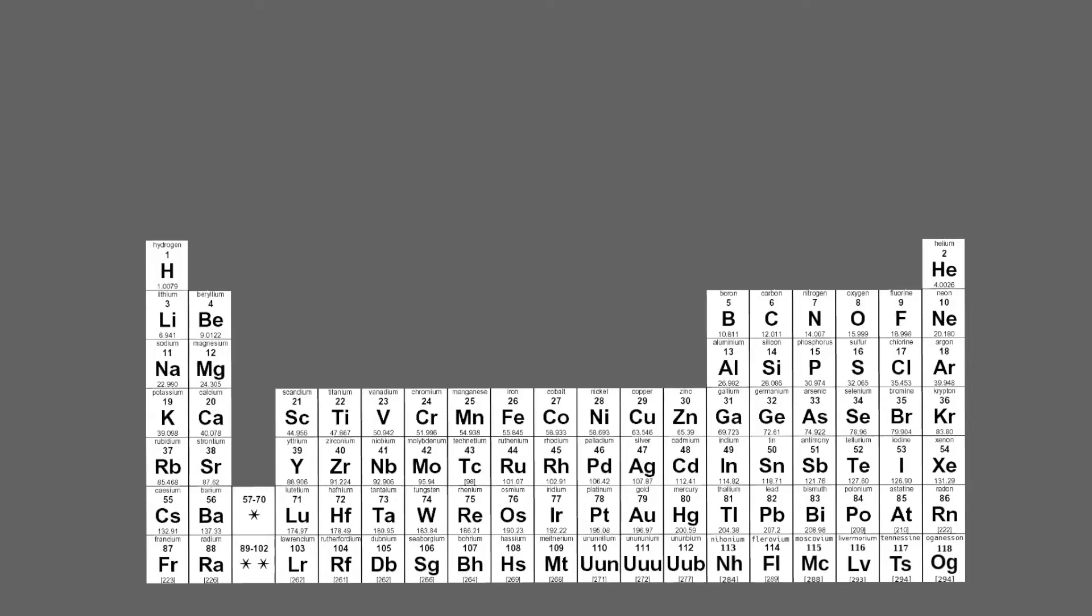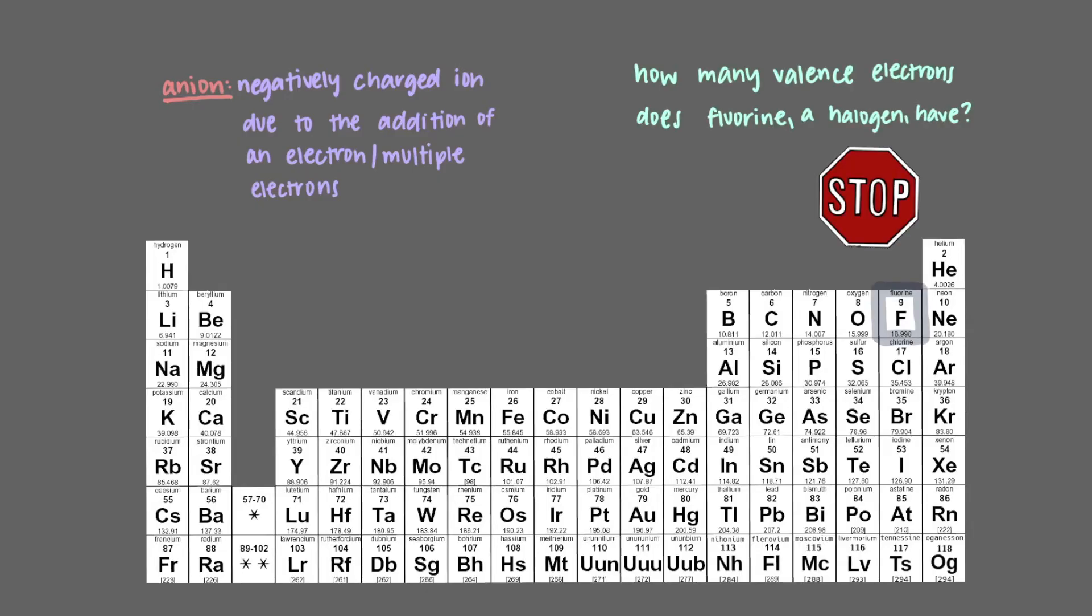Non-metals, such as halogens found in the 17th column of the periodic table, gain a single electron to achieve noble gas configuration. The atoms become negatively charged and are called anions. How many valence electrons does fluorine, a halogen, have?